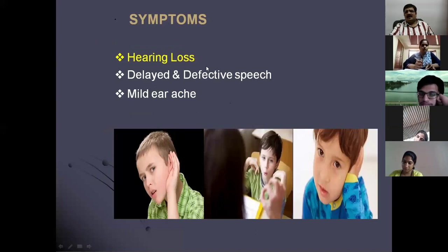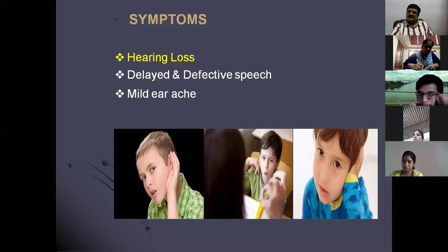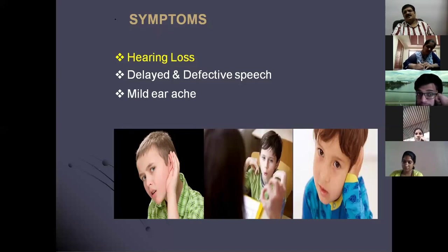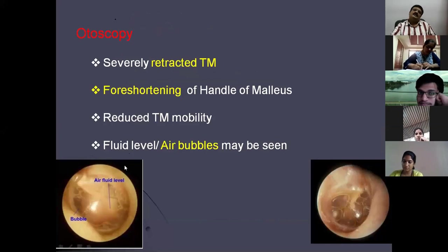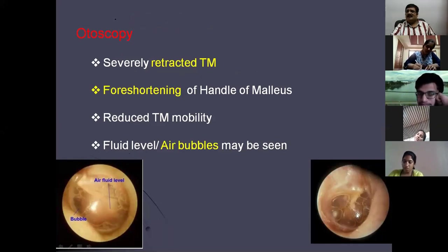Symptoms will be similar — there will be a conductive hearing loss or a fluctuating hearing loss. Because the age group is mostly children, there will be delayed and defective speech. The patient might not be aware of when the disease process started, as there is no infectious pathology. The ear pain will be usually of mild origin. Otoscopy reveals a severely retracted tympanic membrane with foreshortening of the handle of malleus, and you can see fluid bubbles behind the intact tympanic membrane.